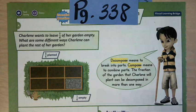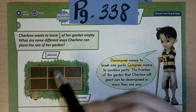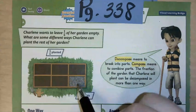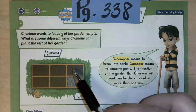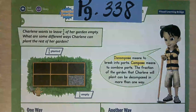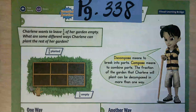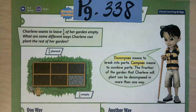On page 338 it says Charlene wants to leave one-sixth of her garden empty. What are some different ways that Charlene can plant the rest of her garden? The garden is broken into six parts — one spot is unplanted, so 1/6 is empty and 5/6 are planted. It says: decompose means to break into parts; compose means to combine parts. The fraction Charlene will plant can be decomposed in more than one way — just like with 11/8, there is not always one right answer.